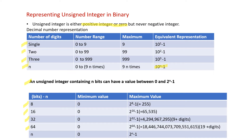An n-bit pattern can represent 2^n distinct integers. Unsigned integers are represented by storing their equivalent binary code through n bits, and this n can be 8, 16, 32, or 64.